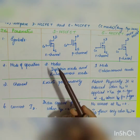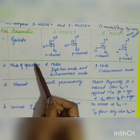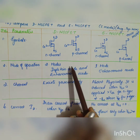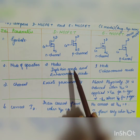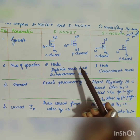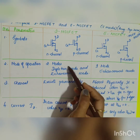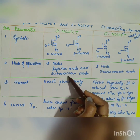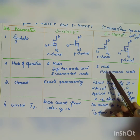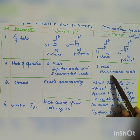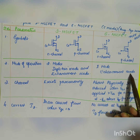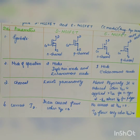The second difference is in the mode of operation. The Depletion MOSFET can work in two modes: the depletion mode and the enhancement mode. When VGS is negative, it works in depletion mode, and when VGS is positive, it works in enhancement mode. The Enhancement MOSFET works only in one mode — the enhancement mode — where VGS is positive.